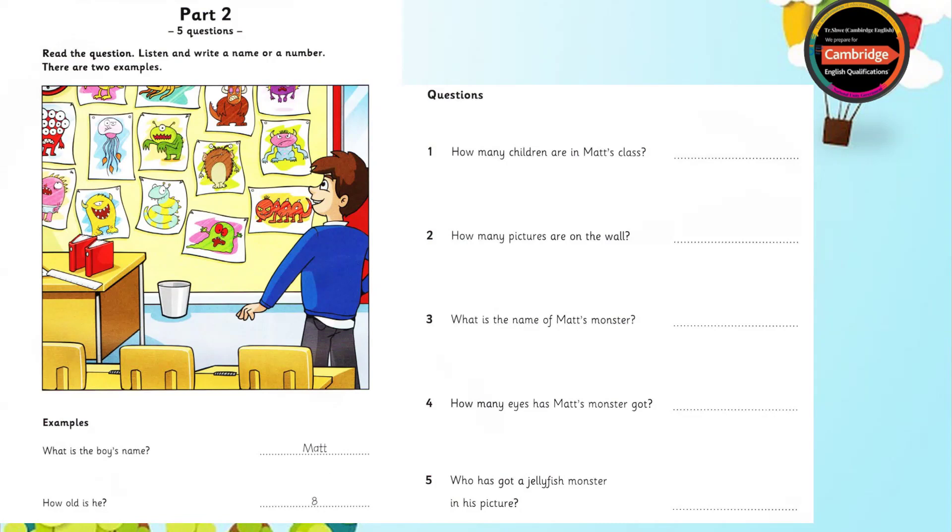One. Would you like to see my classroom? Yes, please. We're making a wall of monster pictures. Wow! How many children are in your class? It's a small class. Nineteen. Nineteen children. That's good.